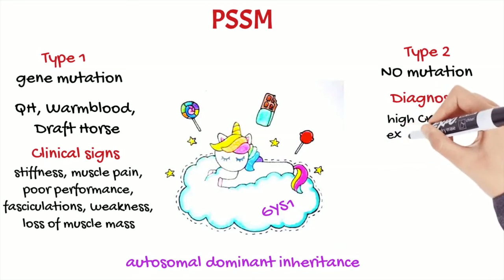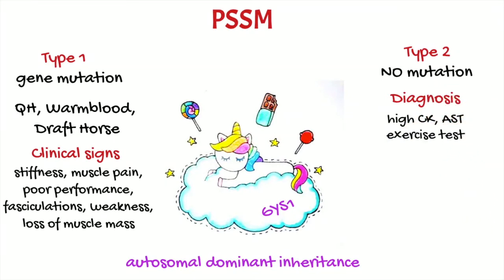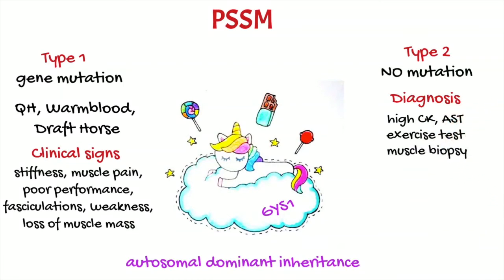With an exercise test it is possible to identify a three-fold increase in CK four hours after the exercise. Muscular biopsies will allow detection of this abnormal excess of polysaccharides, but not to distinguish between type 1 and type 2. As type 2 fibers are those most severely affected, muscular biopsies should be performed of gluteal muscles or semimembranosus and semitendinosus.